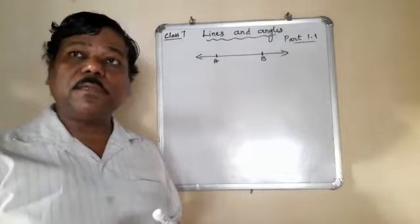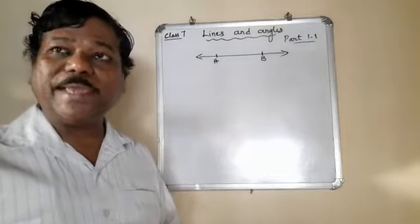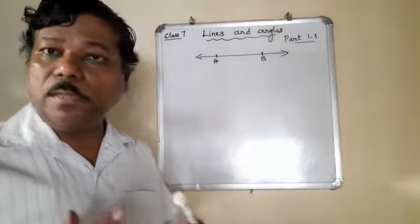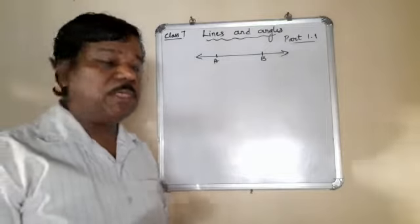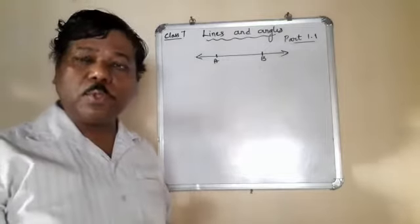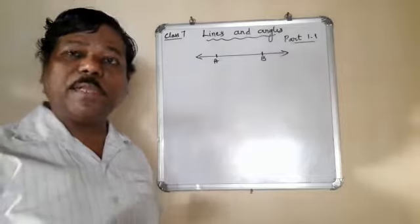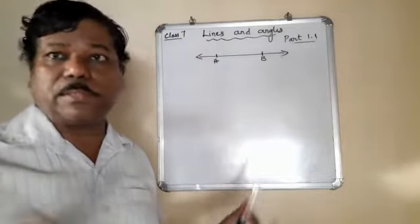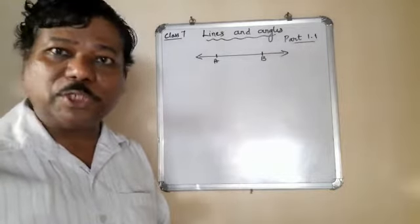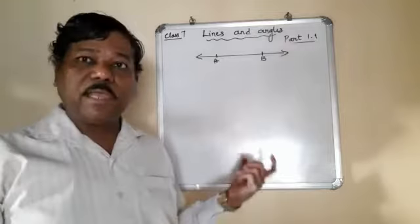It has a certain dimension or magnitude which we can measure. It is so many millimeters, so many centimeters or so many kilometers or meters. We can definitely measure it. This is having a measure.